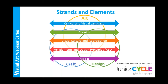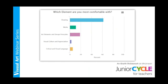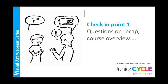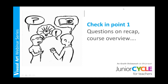We will be building our understanding of the five elements throughout the next number of years. To recap, they are across all three strands and are of equal importance, and our learning outcomes have been developed from these. In our workshop on the 20th of March, we asked teachers which of the five elements they were most comfortable with. Here is a screenshot of the results from our poll. We now know that more support might be needed around visual culture and appreciation. We will now take a short break to answer questions around the context of the course outline we have just viewed.